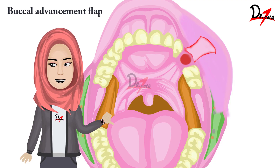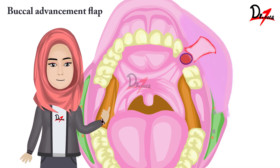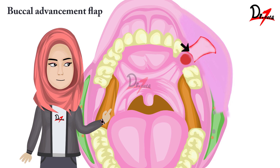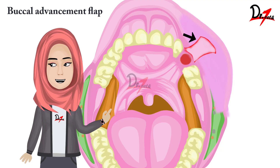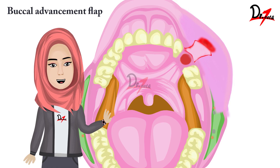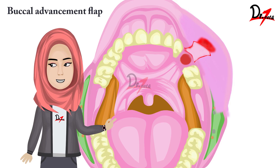We excise the fistula tract using blade number 11 and run it across the excised gum margins to give them fresh blood supply. Then we give an incision using blade number 15, starting from each side of the opening into the buccal sulcus up to a distance of 2.5 centimeters, extended towards the cheek — making sure not to injure the duct of the parotid salivary gland, which lies in that area. After reflecting this mucoperiosteal flap, we check the bony margins of the ridge and smoothen them if needed.